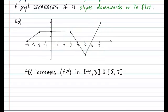Now let's take a look at the parts of the graph that decrease. Decrease meaning that it slopes downwards or is flat. Don't forget a flat line is considered decreasing also.